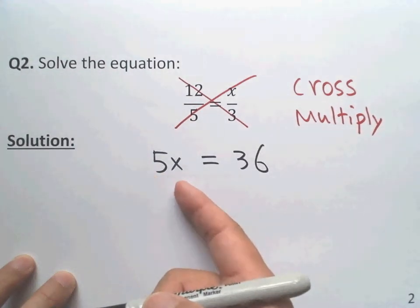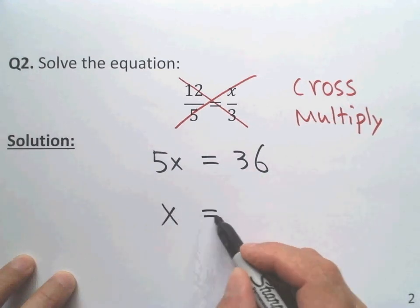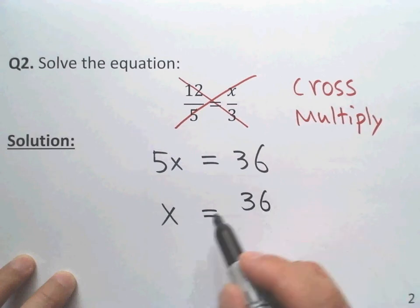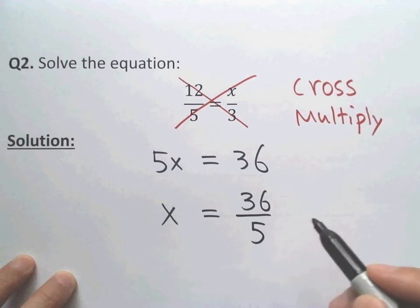Divide by 5 to the left, divide by 5 to the right, you get x. So divide by 5 to the left, we get x. Divide by 5 to the right, we get 36 over 5.